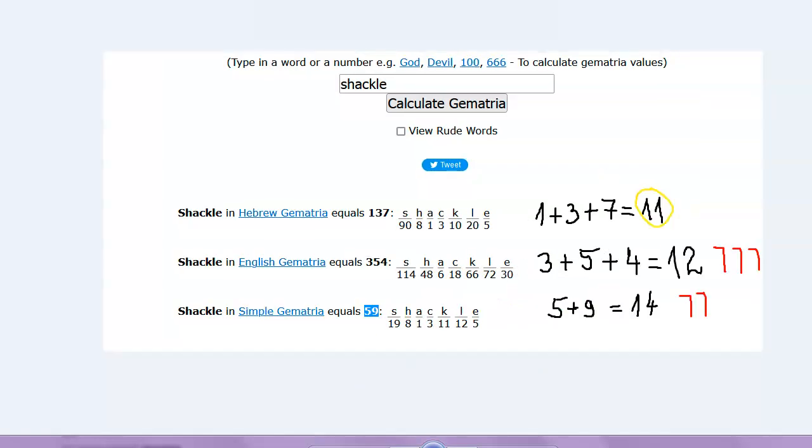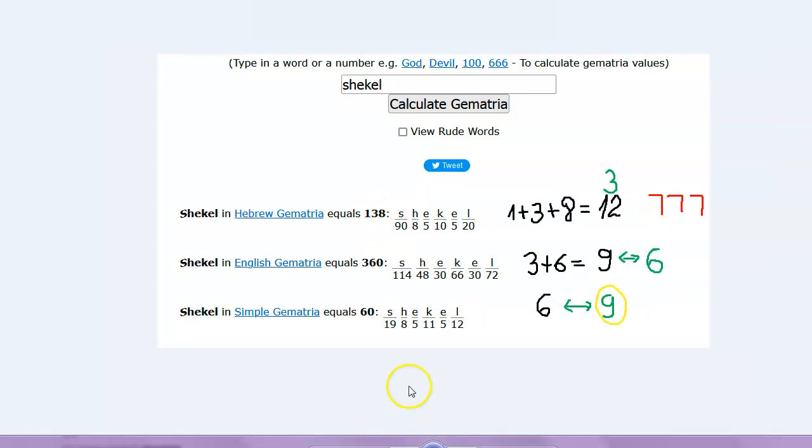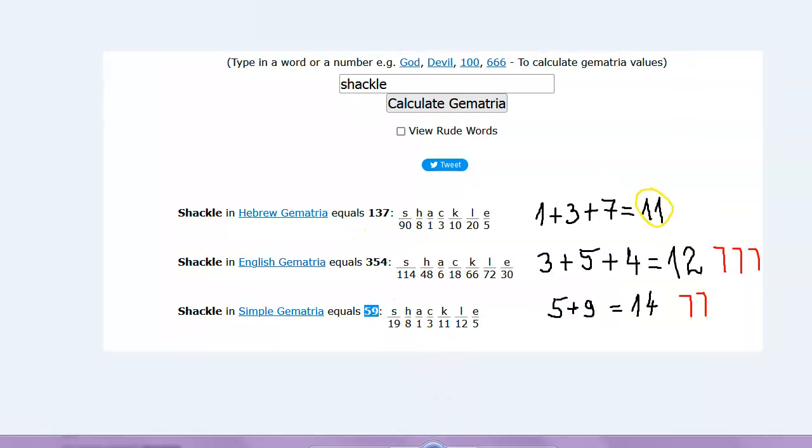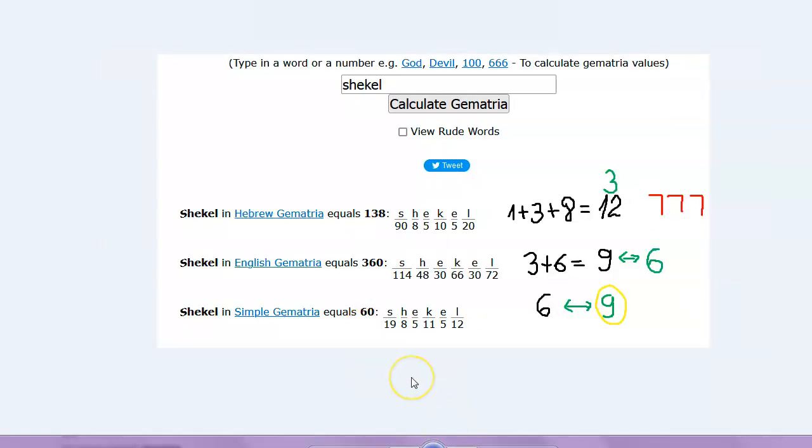And there's another connection yet. If you go from shackle to shackles, I mean reversed - let's say reversed - you see 137 here going into 138, and here you have 59 into 60. Yeah, those are just some interesting connections.